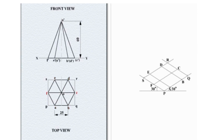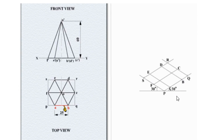Now join the points F, C, B, D, A, and E. Join all these points: A to B, B to C, C to D, D to E, E to F, and F back to A. We will get the hexagon on the isometric view.